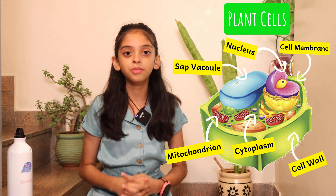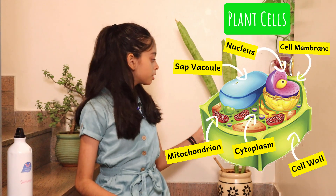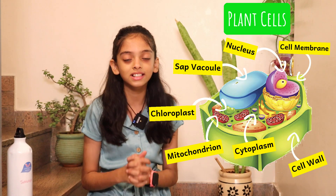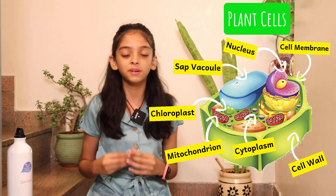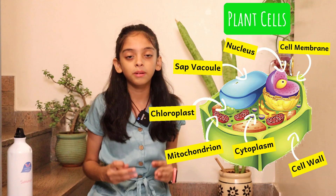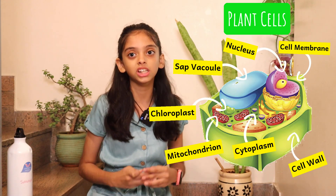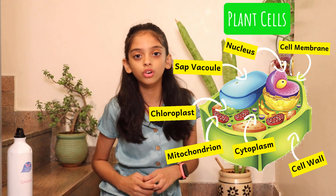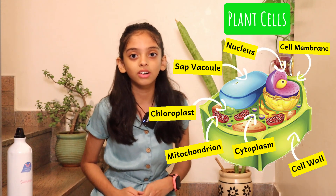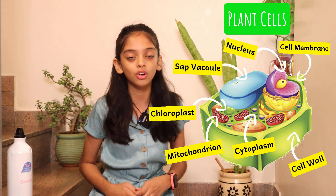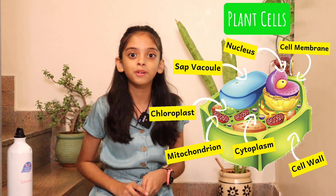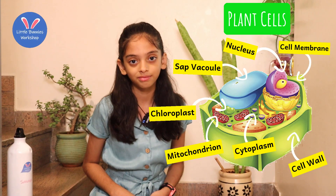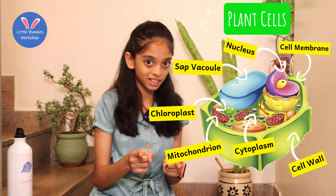Next up is chloroplasts. Look at this beautiful plant — don't you wonder why its leaves are so green? It's because of chloroplasts. Plants that are often exposed to sunlight contain chloroplasts. Chloroplasts look green because they contain a substance called chlorophyll. Chloroplasts are what make the food of the cell using sunlight.